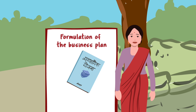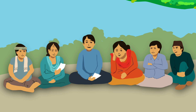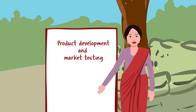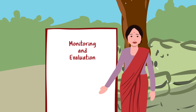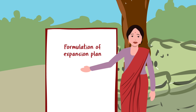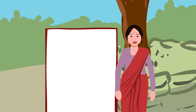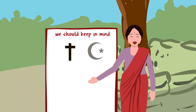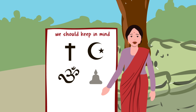After identifying the business, we have to formulate the business plan. Other steps are product development, management and market testing, monitoring and evaluation, and formulation of an expansion plan. While conducting the area potential survey, the surveyor must respect the culture and religion of the village where the survey is taking place.